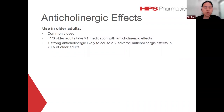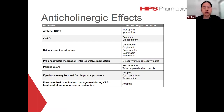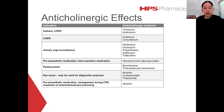Anticholinergic drugs may be prescribed to treat conditions such as urge incontinence and Parkinsonism. However, owing to the large distribution of cholinergic receptors throughout the body, anticholinergic medications can have a wide range of adverse effects, and adverse effects are usually dose and patient dependent. Therefore, use the lowest effective dose and titrate slowly. There are some examples of anticholinergic medications in this table.